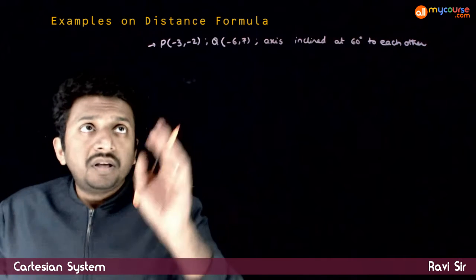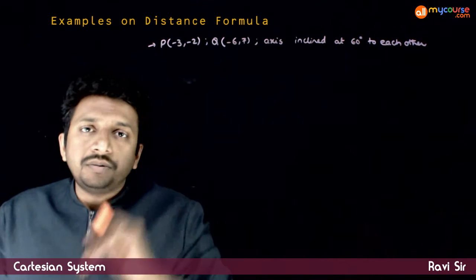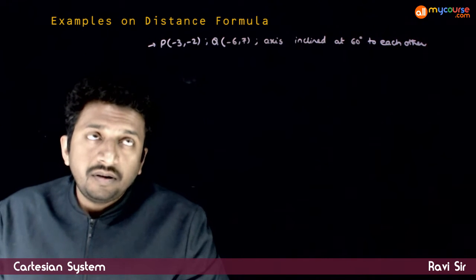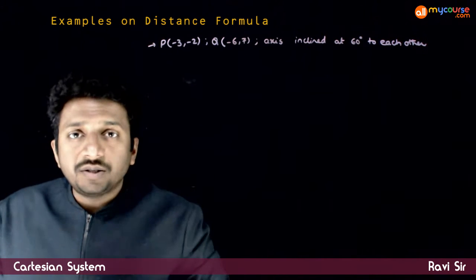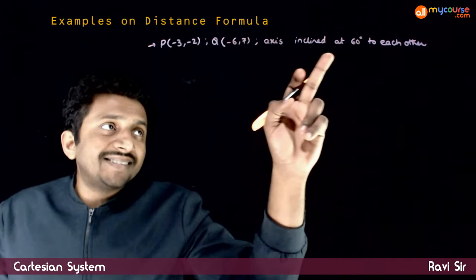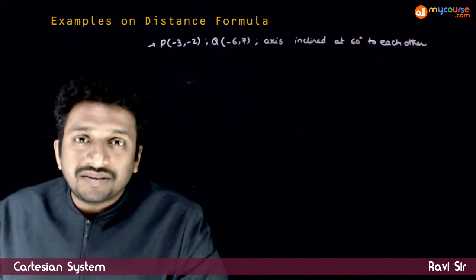In this question, you are given two points: minus 3, minus 2, and minus 6, 7. You are asked to find the distance between these two points where axes are inclined at 60 degrees to each other.